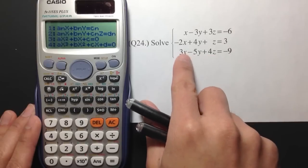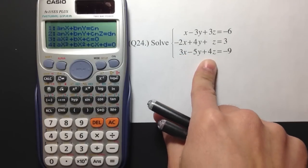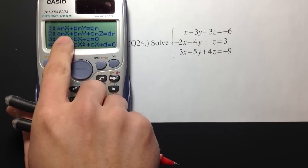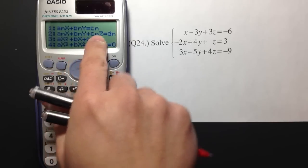And then, notice that we have a 3x3 system of equations. We are going to choose number 2. Notice that we have the x, y, and z. So, that's hit 2.